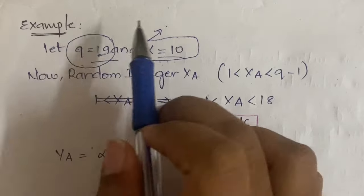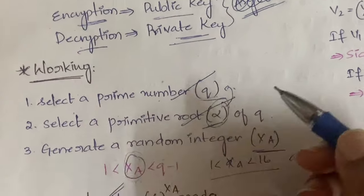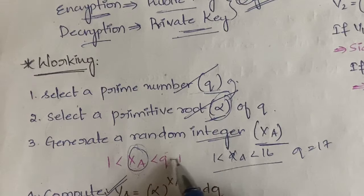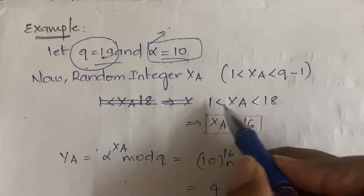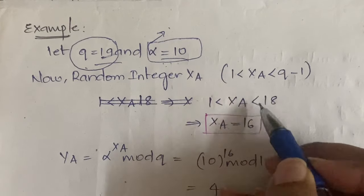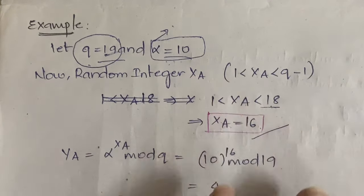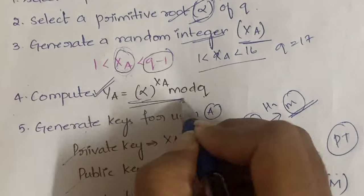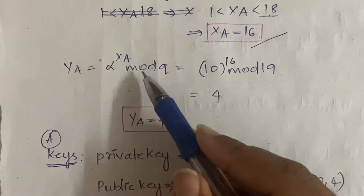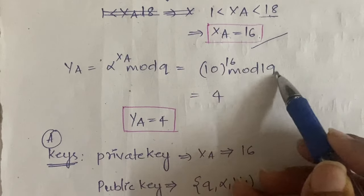To understand what a primitive root is, watch the Diffie-Hellman key exchange video. Next, generate a random integer xa such that 1 < xa < q−1. Since q = 19, xa must lie between 1 and 18. We assume xa = 16. Now compute ya = alpha^xa mod q = 10^16 mod 19, which gives ya = 4.